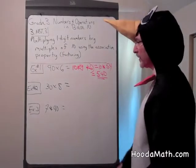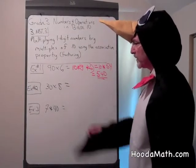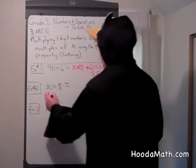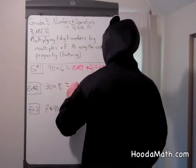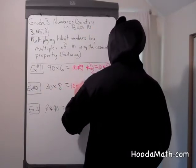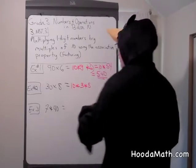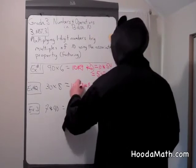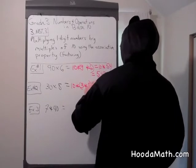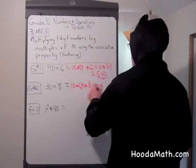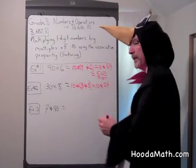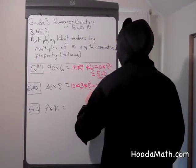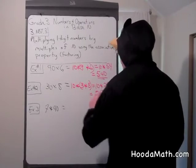Let's do another example. 30 times 8. 30 times 8 can be factored into 10 times 3 times 8. First, we're going to multiply the 3 times 8, and we get 10 times 24. Remembering our rule about multiplying by 10, we get 240 as our product.